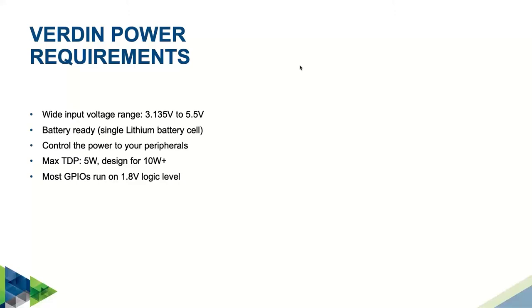Most GPIOs run on a 1.8 volt logic level. Most newer SoC systems run GPIOs on that voltage, and we're seeing more peripherals that operate on that voltage, but you can always properly level shift if you need.